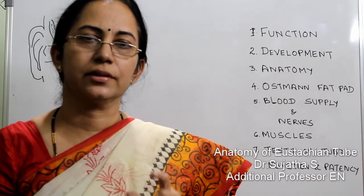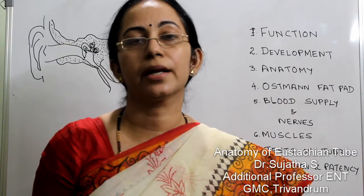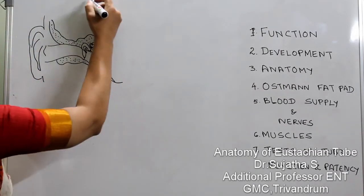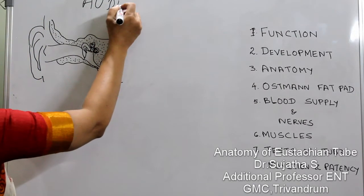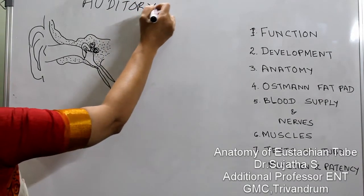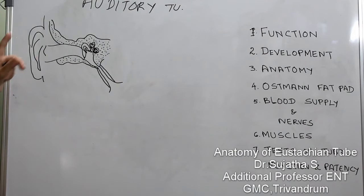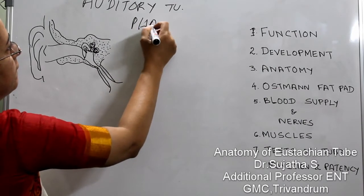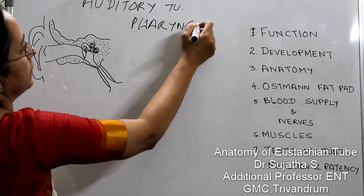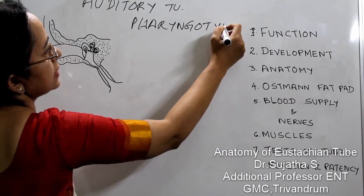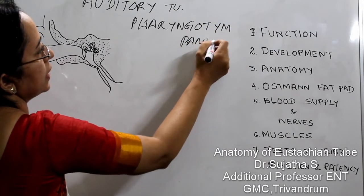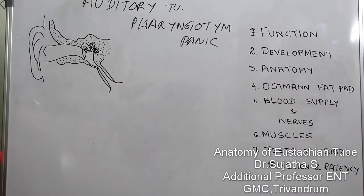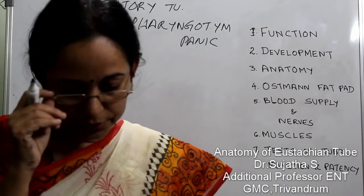The Eustachian tube is very short, less than 4 cm, but you may need at least 4 full pages to write about it. It is also called the auditory tube or the pharyngotympanic tube. This topic is usually asked in essays or short notes, so we can discuss it under all these headings and then come to the function of the Eustachian tube.